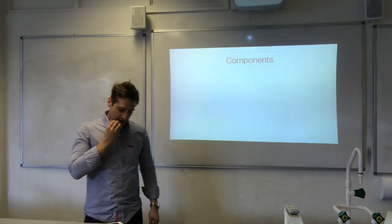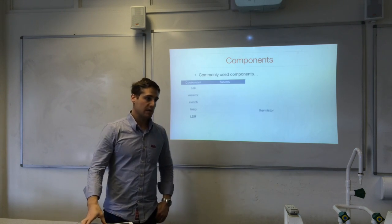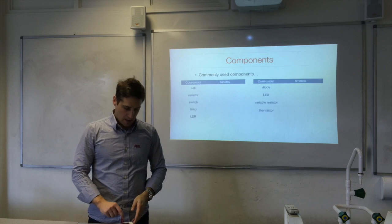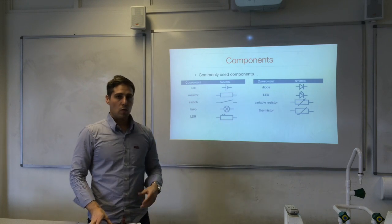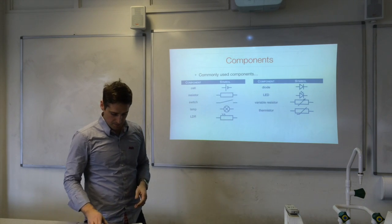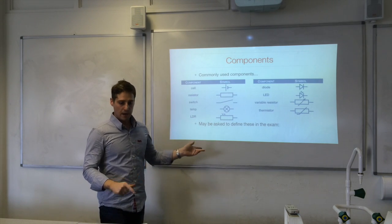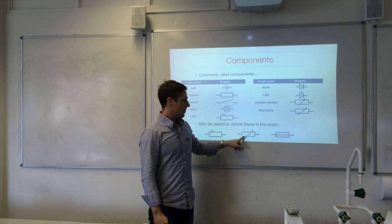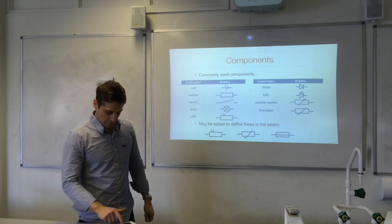Let's get started with electricity. You need to have a knowledge of several components — cells, resistors, lamps, LDRs (light dependent resistors) — and how they work in a circuit. It's quite common for there to be an exam question about some components in particular: the light dependent resistor, the thermistor, and a few others. So often you'd have to give an explanation of what they do — bear that in mind.